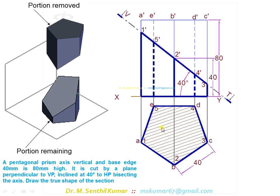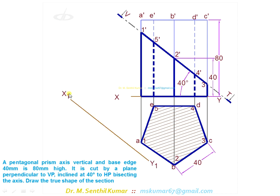Now we will find the true shape of the section. To get the true shape, the observer has to look perpendicularly to the section plane. The true shape will appear from that direction. The procedure is: draw a new reference line x1-y1 parallel to the section line VT. This x1-y1 line should be parallel to the section line — it can be at any distance. Then, for each cutting point, draw a projector perpendicular to x1-y1. For cutting point 1, mark point 1-1 such that the distance of 1-1 from x1-y1 equals the distance of point 1 from XY in the top view.